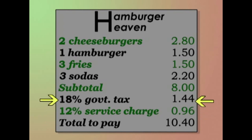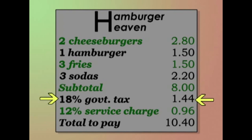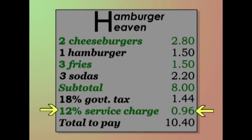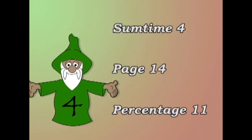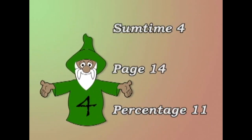Our subtotal was $8.00. Our government tax was $1.44. And our service charge was 96 cents, making a grand total of $10.40. That's all for today. See you again soon.